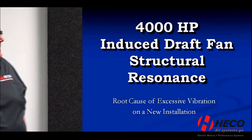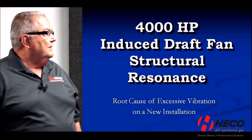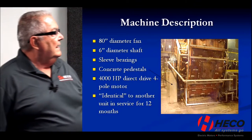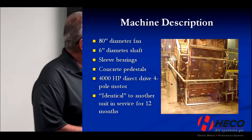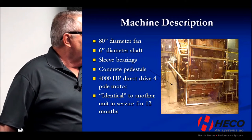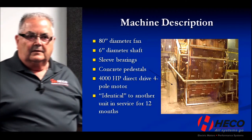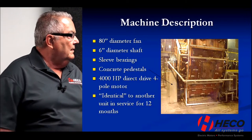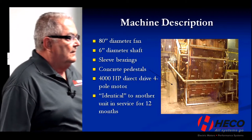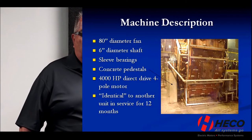The first case is a 4,000 horsepower induced draft ID fan that had a structural resonance. It's an 80-inch diameter fan — there's a picture of it — with a 6-inch diameter shaft, sleeve bearings, concrete pedestals, direct drive to a four-pole motor running around 1,800 RPM. It's identical to another unit that has been in service for 12 months. This was a plant that was expanding, and the first fan came in, was commissioned, and ran fine with no problems.